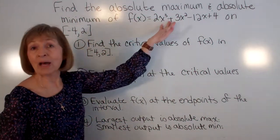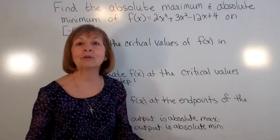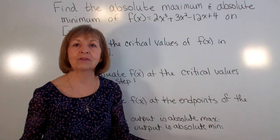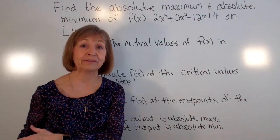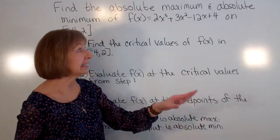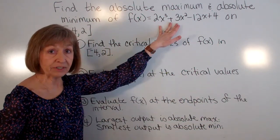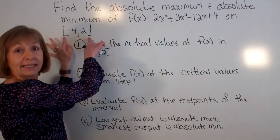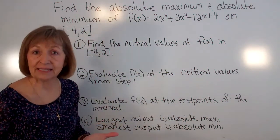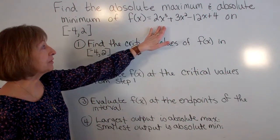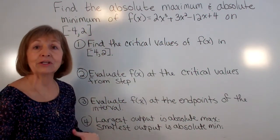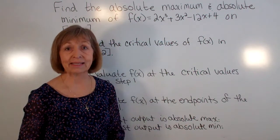Now this is a polynomial function and polynomial functions are continuous throughout the entire domain of negative infinity to infinity. So I do have a continuous function, and with the brackets it's designating that I'm using the endpoints. So I have a continuous function on a closed interval, so I'm guaranteed an absolute max and absolute min.